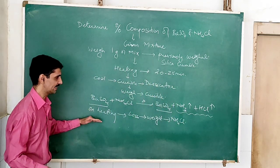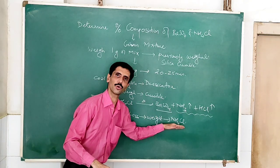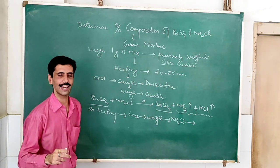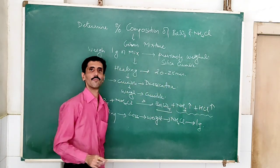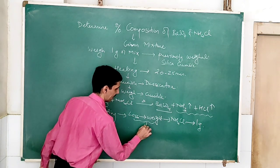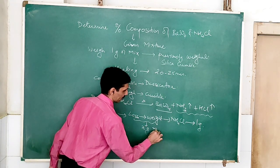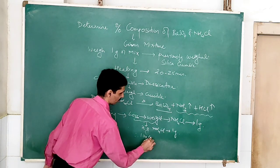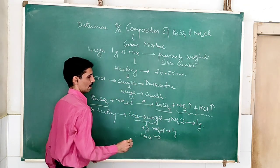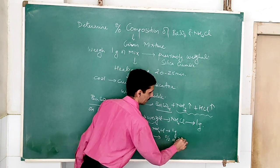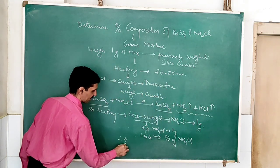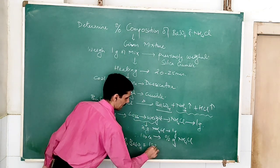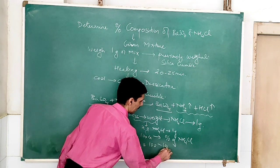On heating, there will be a loss in weight. That loss in weight corresponds to ammonium chloride. The difference in weight — that is going to be the amount of ammonium chloride present in one gram of the mixture. Suppose the loss in weight is X grams, then X grams of ammonium chloride is present in one gram of the mixture. So therefore, 100X is the percentage composition of ammonium chloride, and the percentage composition of barium sulfate will be equal to 100 minus 100X.